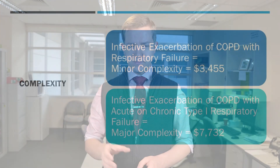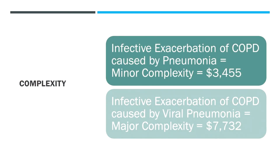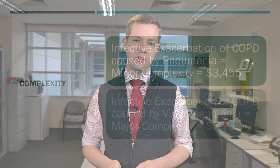Here are some examples in terms of complexity. If you document infective exacerbation of COPD with respiratory failure, that gives minor complexity — about $3,500. If you document the same thing but write 'acute on chronic type 1 respiratory failure' instead of just 'respiratory failure,' that moves it into major complexity. That specificity of the type of respiratory failure, rather than the symptom of respiratory distress, adds complexity. Similarly, infective exacerbation of COPD caused by pneumonia is minor complexity at $3,500, but if you state the etiology as viral or bacterial pneumonia, it increases to major complexity at $7,700.